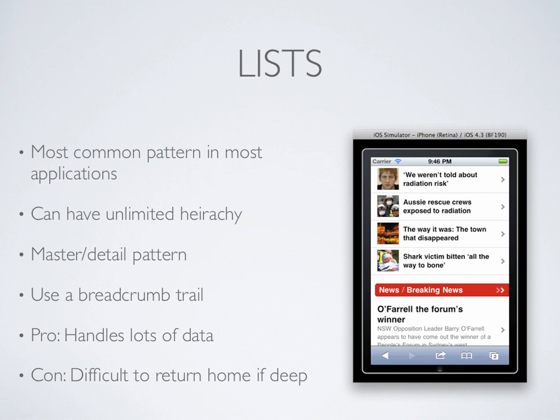Tab bars hold stacks of pages. If you make those stacks lists, you best emulate a traditional site hierarchy. A list uses the master-detail pattern. You pick an item from the master view, and you get to see the detail view. If you have a lot of structured data, it's a winner. But don't go too deep, because it makes going back up the list a bit of a pain.